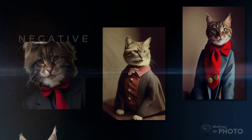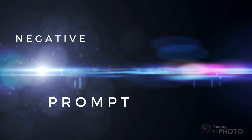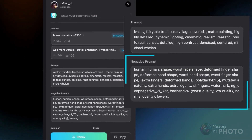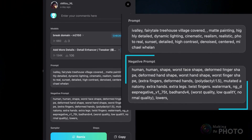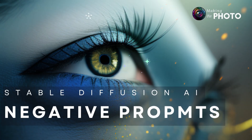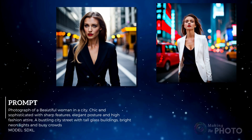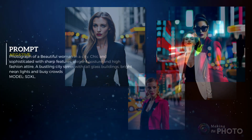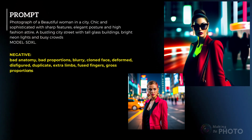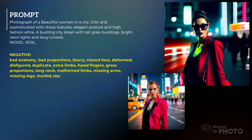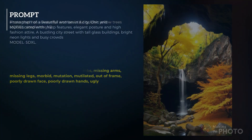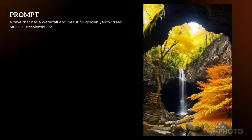In the prompt box, you describe what you want to see. But in the negative prompt box, you describe what you don't want to see. I have an entire video on how to use negative prompts in stable diffusion. Some of the most common negative prompts have to do with body distortions — no deformed or disfigured hands or faces, extra limbs, that sort of thing. Many creators use the same negative prompts on all of their images.